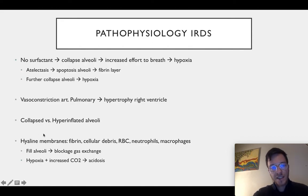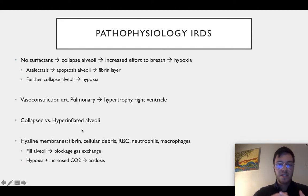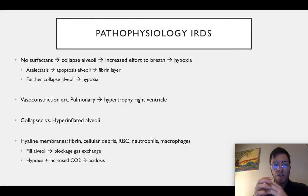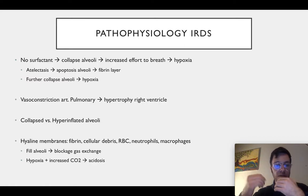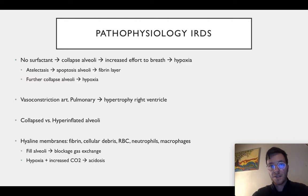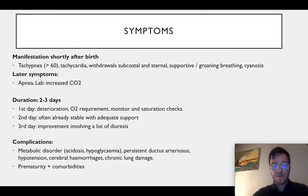In the last step, hyaline membranes are formed, which consist of fibrin, cellular debris, red blood cells, neutrophils, and macrophages. They fill up the alveoli and further block gas exchange, leading to more hypoxia, more carbon dioxide, and an acidosis in your blood if you were to test it. This can lead to several symptoms.